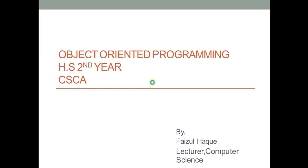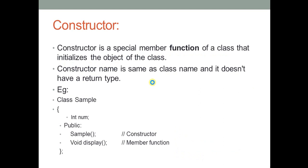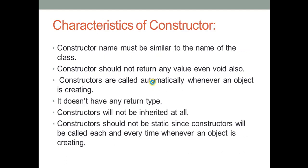Good morning, dear students. In the previous classes we learned about constructors and various types of constructors. In today's class we are going to see what a destructor is. Before proceeding with destructors, let us quickly revise what a constructor is and what the types of constructors are. A constructor is a special member function whose name is similar to the class name, and it is called automatically when we create an object of that class.